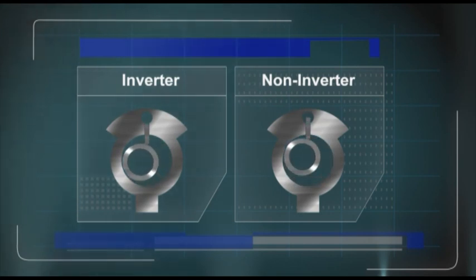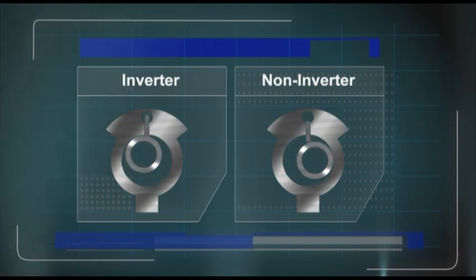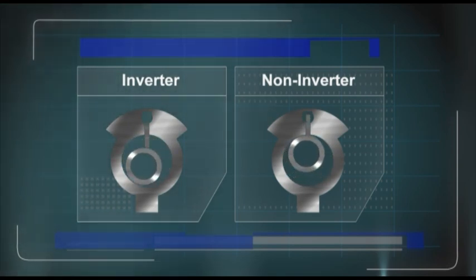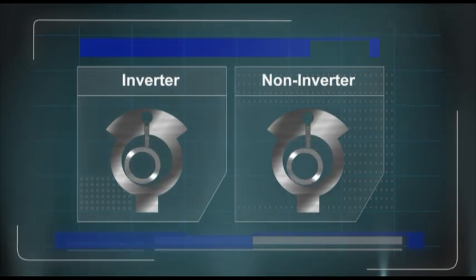With inverter air conditioners, on the other hand, the speed of the compressor is regulated by the inverter to run at very slow speeds or high speeds that go considerably beyond the rating of the unit.